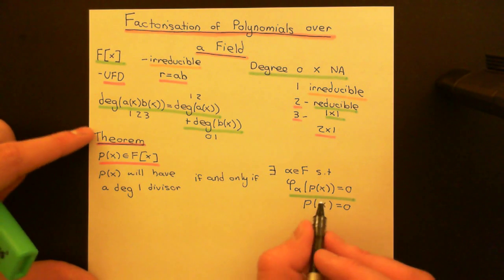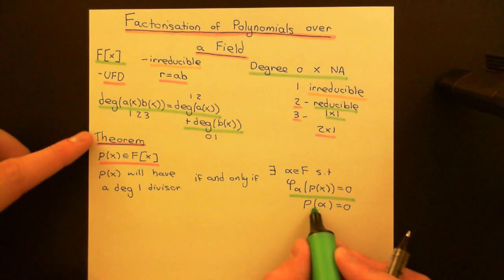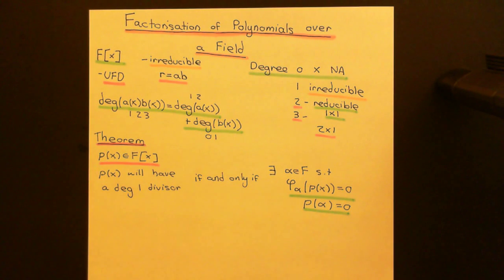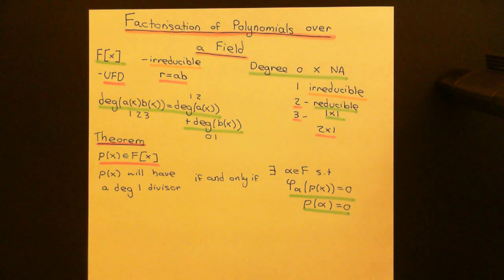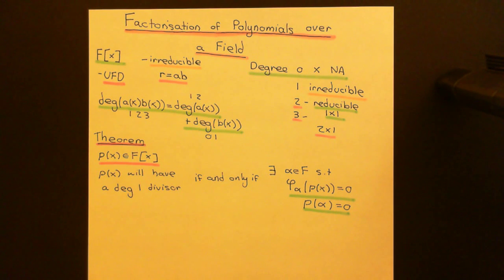The way that people would more normally write this is just putting P evaluated at alpha equals 0. This is to remind you that, strictly speaking, what we are doing is applying a homomorphism from the ring of polynomials over the field into the field itself, where we map any polynomial onto what that polynomial evaluated at alpha is — i.e., we replace the X's with alphas.